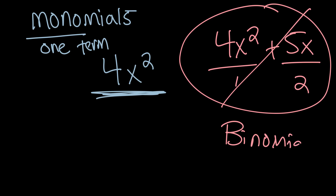That two-term expression is called a binomial, because 'bi' means two — like a bicycle has two wheels. We're not working with those yet; go to future videos if you're ready for binomials. For now, we're just going to be multiplying monomials together.